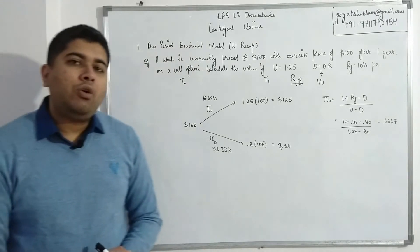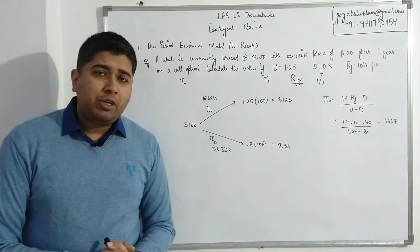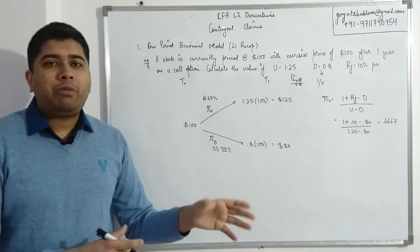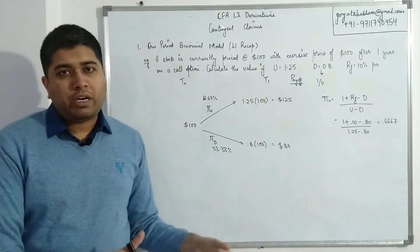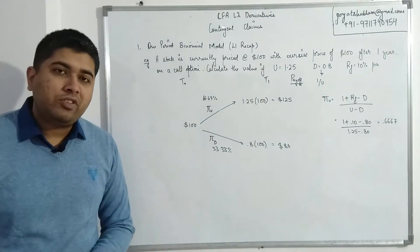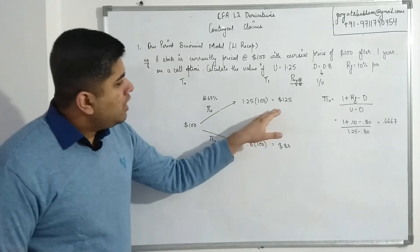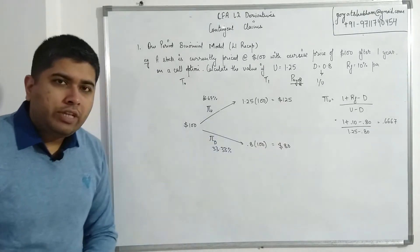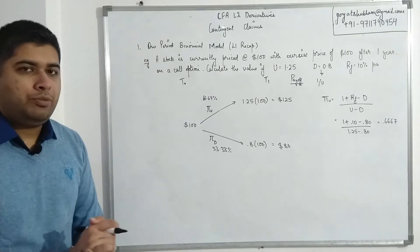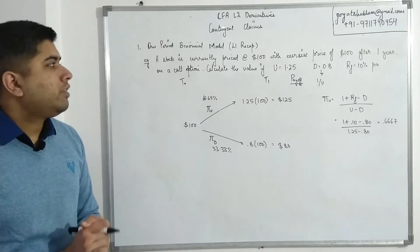If it just says call option, we solve it from the perspective of a long call always, because whatever the value is for one party, whatever the gain is for one party, it would automatically be the loss for the other party in terms of payoff. So 125, now think logically: you have an option to buy the shares of a company at 100, that's the exercise price, when the market price is actually 125.